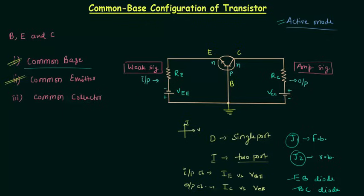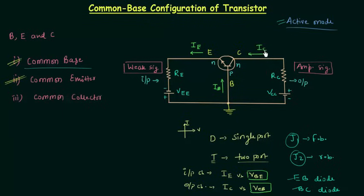The next thing is to find the direction of currents IE, IB, and IC, and what the voltages VBE and VCB are. From the symbol of the transistor, you can see the direction of emitter current IE, the direction of base current IB, and the direction of collector current IC. If you don't know how these directions are obtained, please watch the previous lecture where I have explained this.